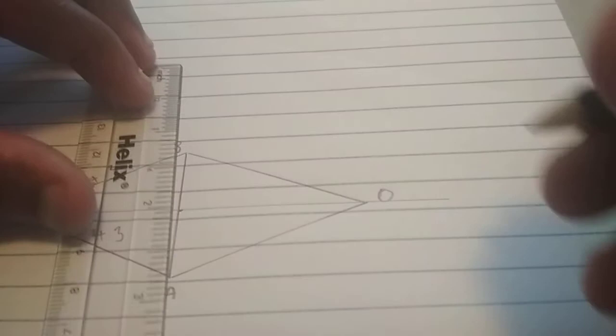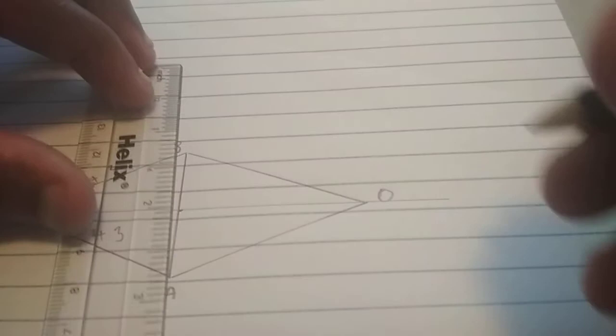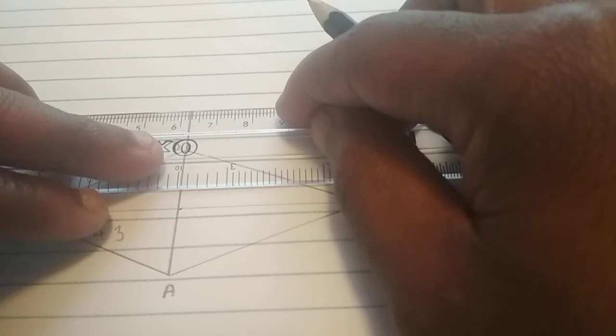Now, we're going to have what we call an elevation line. Now, an elevation line is always at 1.5 centimeters. So, that was 1.5 and then we draw the line.